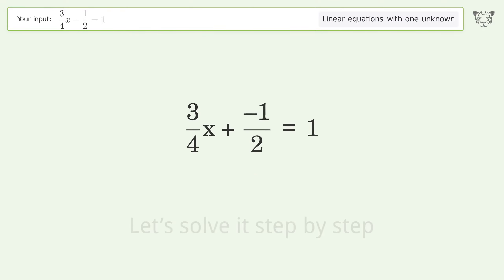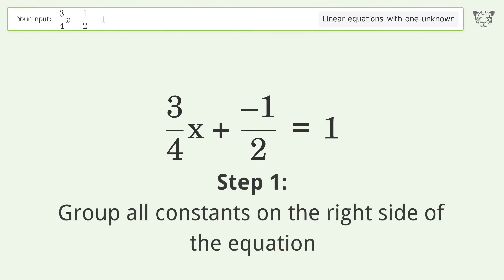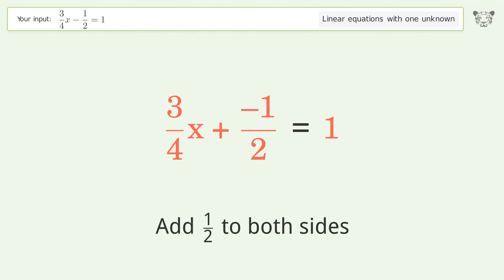Let's solve it step by step. Group all constants on the right side of the equation. Add 1 over 2 to both sides.